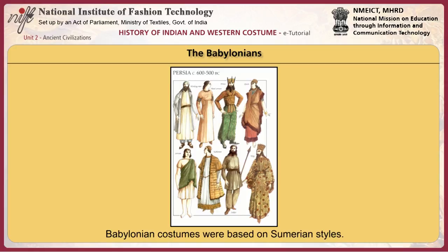A notable introduction was a cut and sewn short-sleeved tunic extending to the knees. Ankle-length versions were worn by men and women of high rank. These were functional and easy to construct. The Sumerian fringe decoration continued in this period, and greater skill in textile weaving was achieved, as was ornamentation through embroidery.